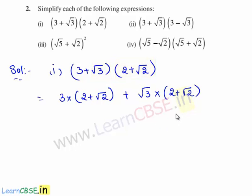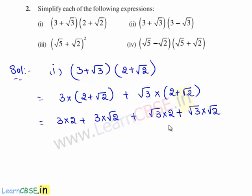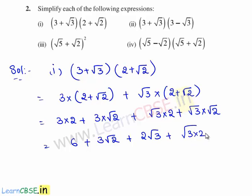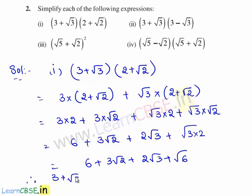Using the distributive law of multiplication over addition, we have 3 times 2 plus 3 times root 2 plus root 3 times 2 plus root 3 times root 2. Here 3 times 2 is 6, 3 times root 2 is 3 root 2, root 3 times 2 is 2 root 3, and root 3 times root 2 is root 6. Therefore (3 plus root 3) times (2 plus root 2) is equal to 6 plus 3 root 2 plus 2 root 3 plus root 6.